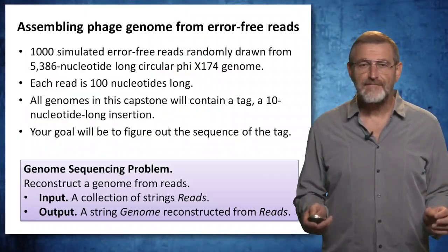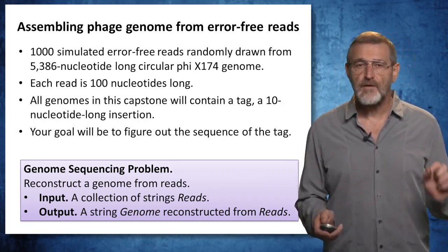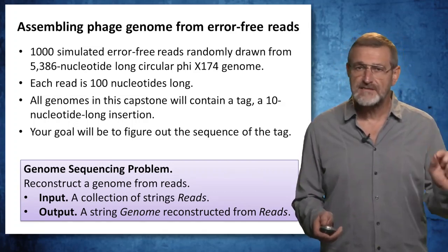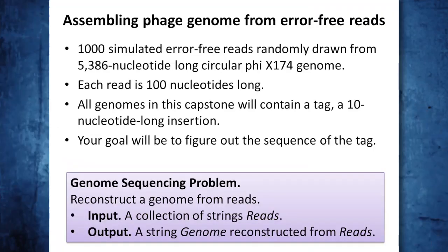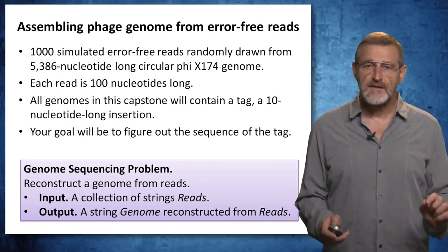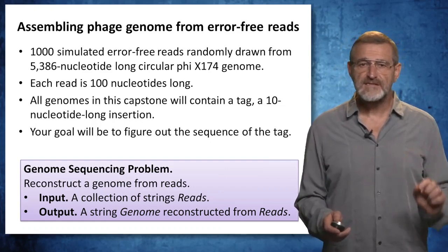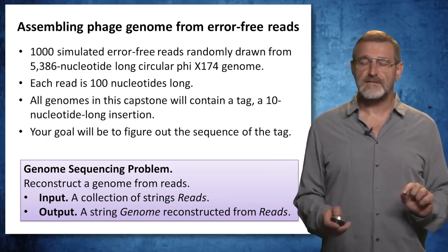You will start from assembling a phage genome, and we will give you a thousand simulated error-free reads, which are randomly sampled from the phage genome. The φX174 genome is a circular genome. Each read will be 100 nucleotides long. To add suspense, all genomes in this capstone will contain a tag — a 10 nucleotide long insertion that we added to make your life a little bit more difficult. Your goal will be to figure out the sequence of the tag. You are now facing the genome sequencing problem, which is to reconstruct a genome from reads. Input is a collection of strings (reads), and output is a string genome reconstructed from reads.